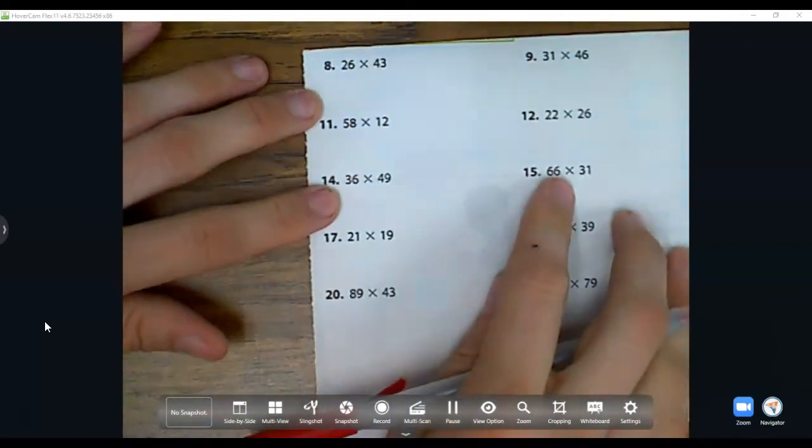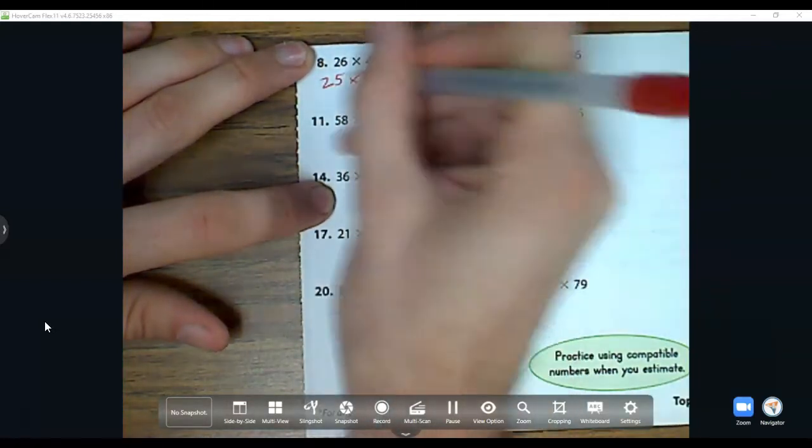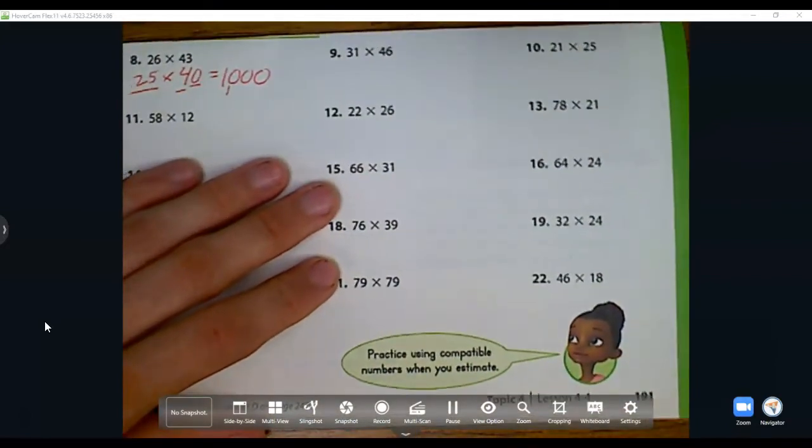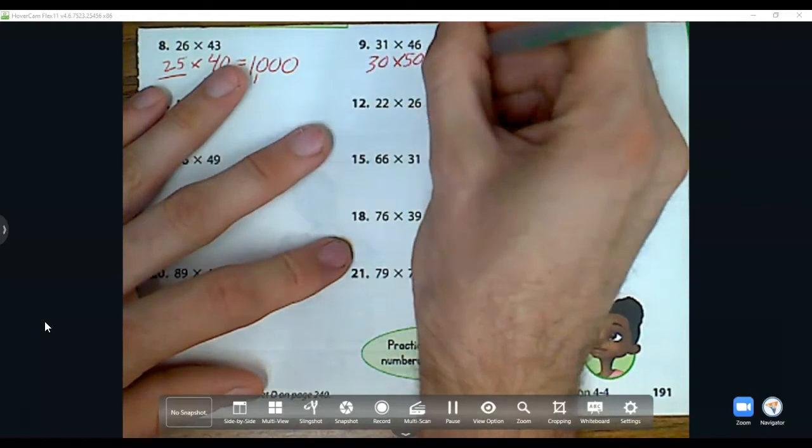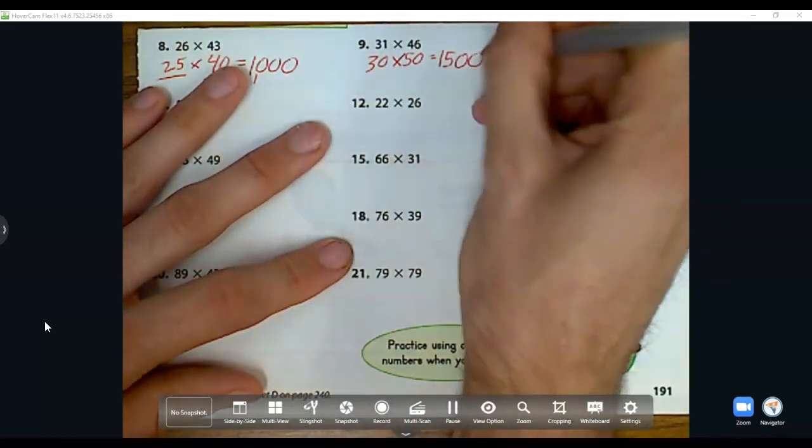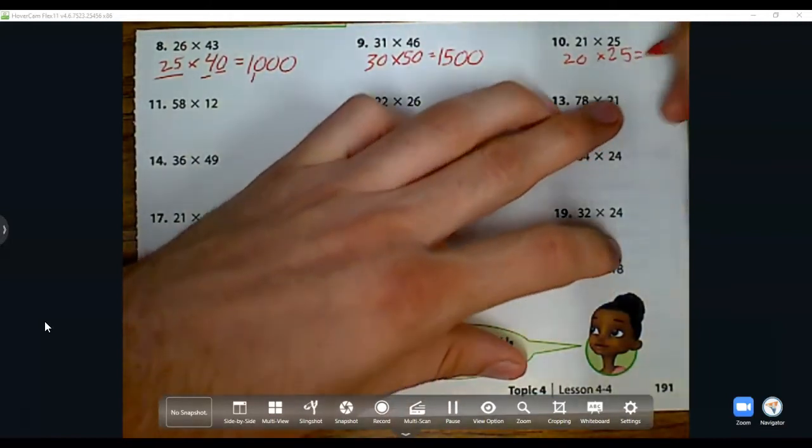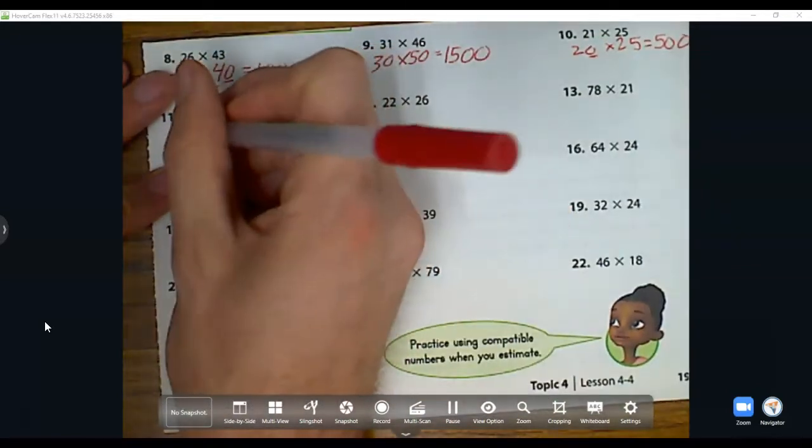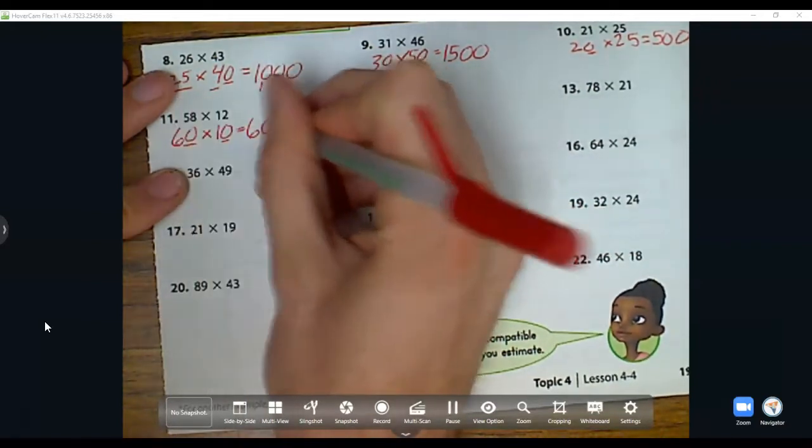Problem number eight: 26 is close to 25, 43 is close to 40. I know 4 times 25 is 100, and I add this zero back on to 1000. For 31 times 46: 31 is close to 30, 46 is close to 50. 5 times 3 is 15, and I add those two zeros back on. Next: 21 is close to 20, 25 stays 25. 2 times 25 is 50, and I add that zero back on. 56 is close to 60, 12 is close to 10. 6 times 1 is 6, and I add my two zeros for 600.